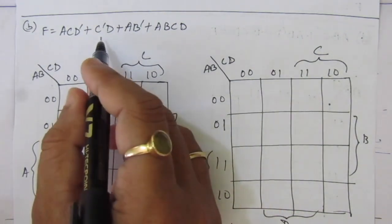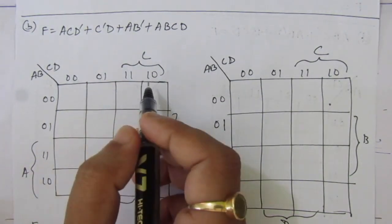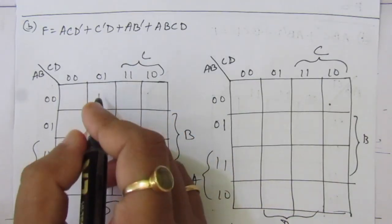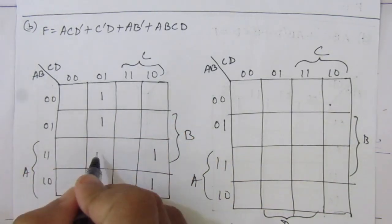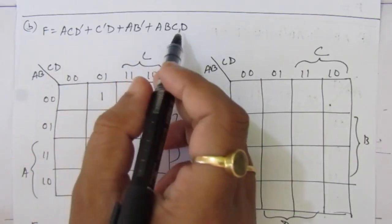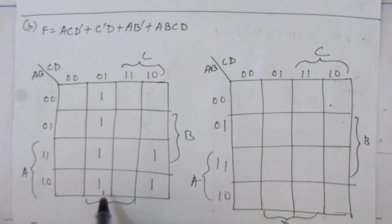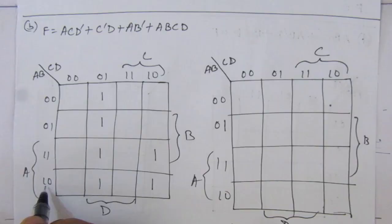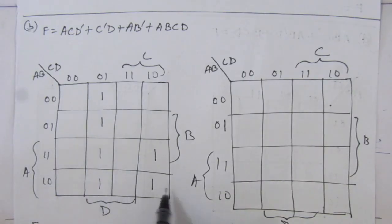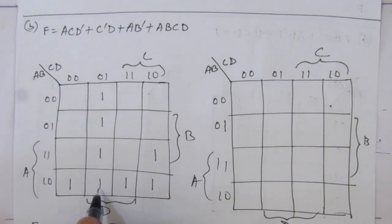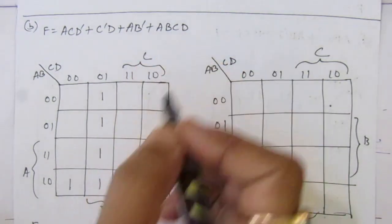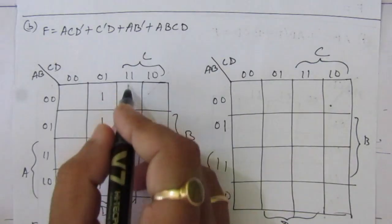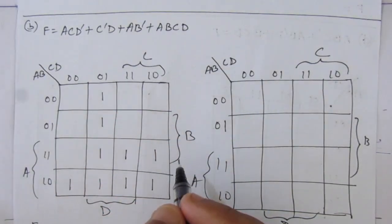The next term is c-bar d. c-bar d means this column — the whole column — so we put one, one, one, one because it is a sum of product expression and we put all one values. For the third term we have a b-bar. b-bar means zero, a means one, so we put all ones here — we already have one and one here, so we add only the remaining two boxes. Then we have a b c d: a b is this row and c d is this column, so we put here one.